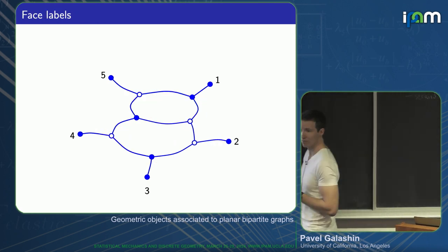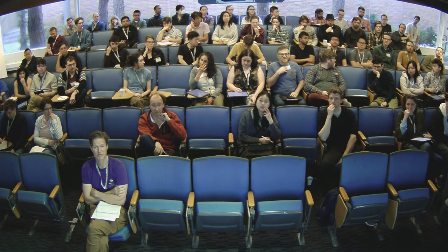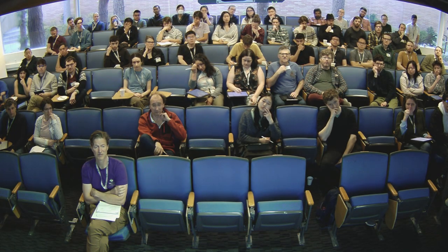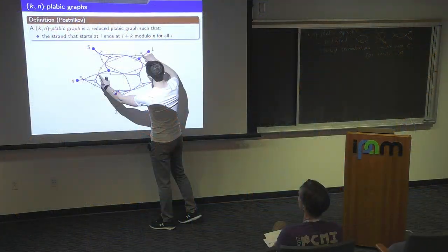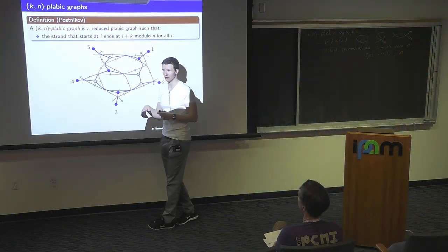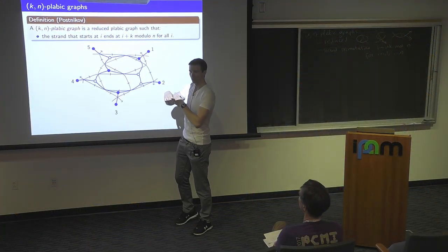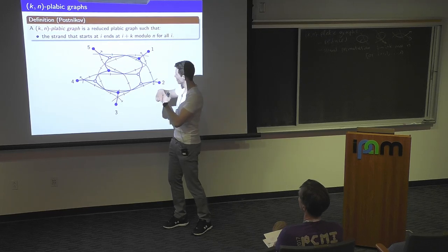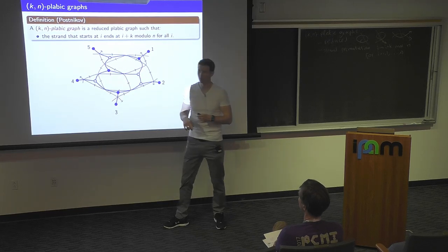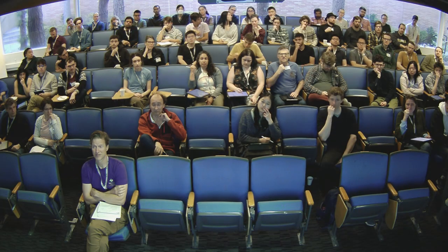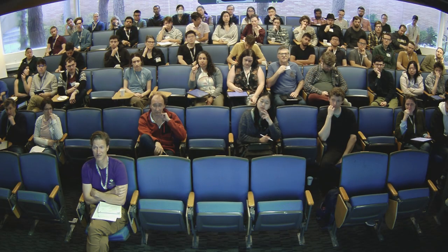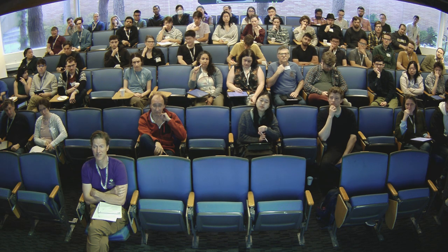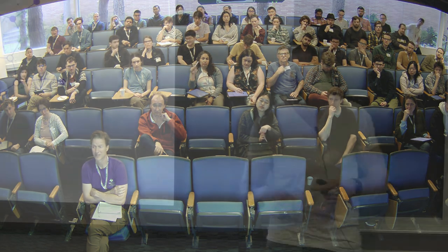Question: what is 'opposite direction'? If you have two intersection points, one strand goes from this point to this — the strands are directed. So with two strands forming a closed region via two intersection points, it's a condition on pairs of strands. Pairs of strands are allowed to intersect multiple times, but they have to traverse the intersection points in the opposite direction.